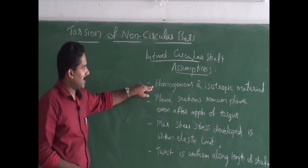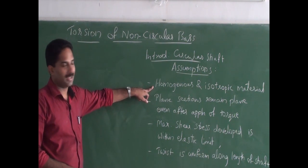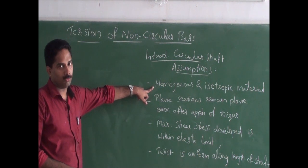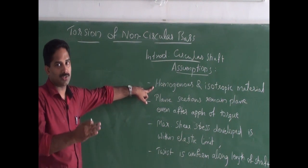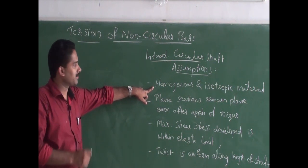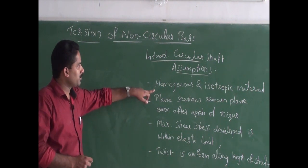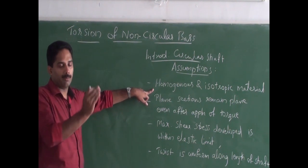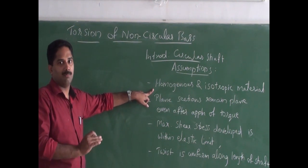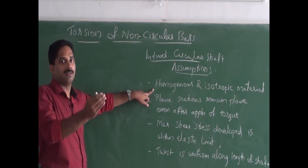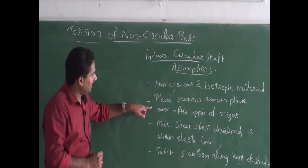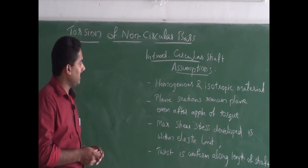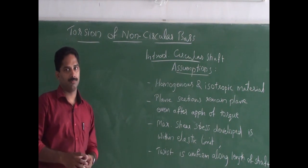The shaft material is homogeneous and isotropic. Isotropic means the property values are the same in all directions. Homogeneous means that in any given direction, the material properties are the same at different places. Also, plane sections remain plane even after the application of torque.